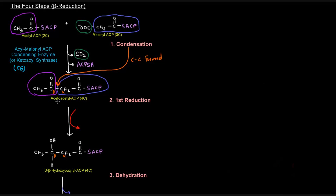Now this beta-ketoacyl-ACP is taken to the next catalytic site for the first reduction. The acetoacetyl-ACP — this four-carbon beta-ketoacyl ACP — is reduced to D-beta-hydroxybutyryl-ACP. This requires the reducing agent NADPH, which goes to NADP+. The reaction is catalyzed by beta-ketoacyl-ACP reductase, which reduces the beta-ketoacyl-ACP to give us D-beta-hydroxybutyryl-ACP.